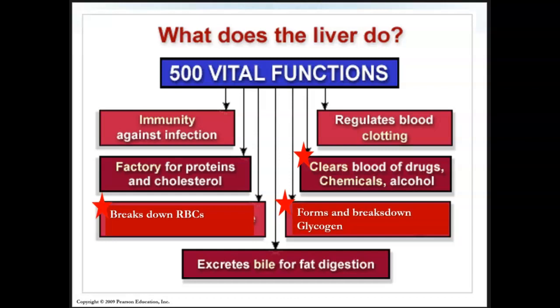The liver can make more glycogen or break down glycogen to release glucose into the bloodstream as needed. It is also involved in producing blood clotting factors — for example, factor VIII is made in the liver. Finally, the liver excretes bile to help with fat digestion, and the bile is then stored in the gallbladder.